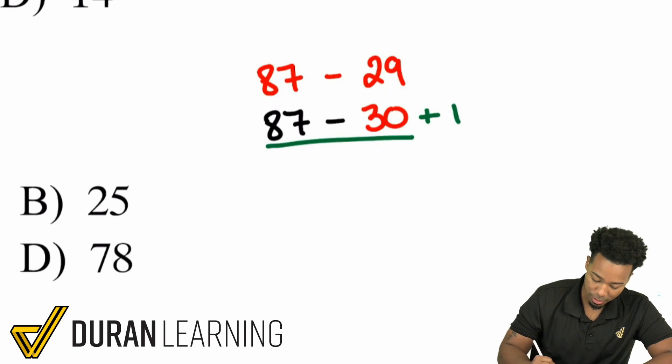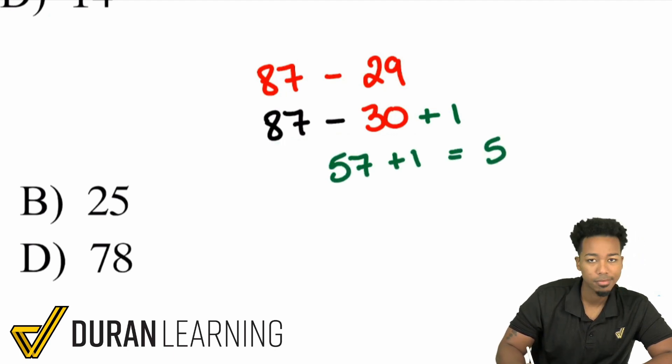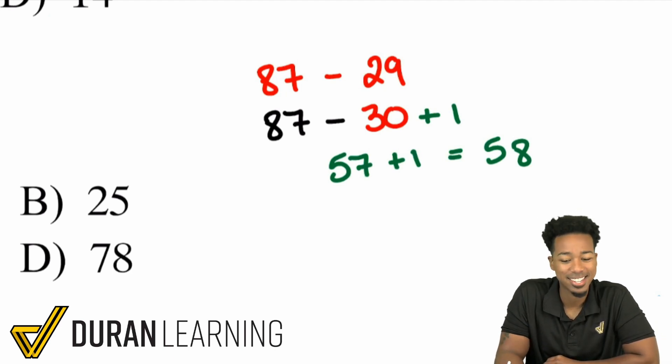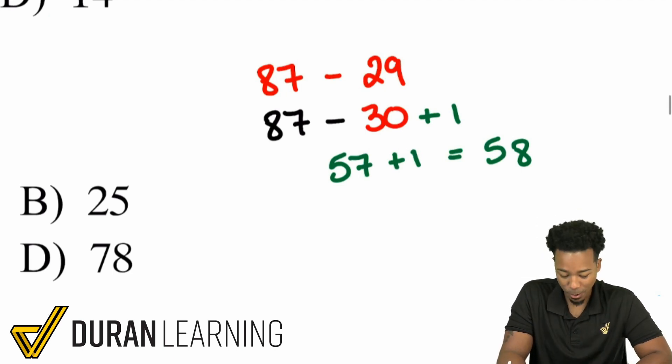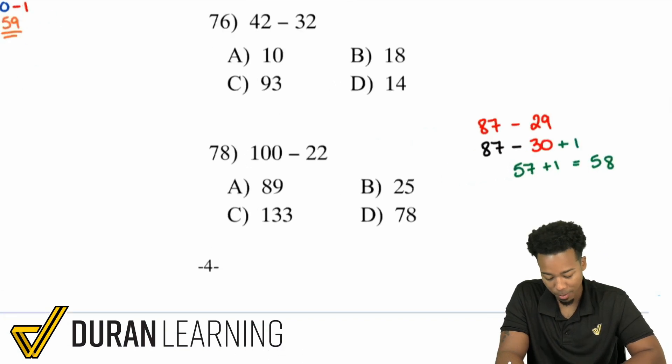And look at how easy this can become. 87 minus 30. 57. What's 57 plus 1? 58. 58. Nice and standard. Nice and easy. And so these are the strategies that we can apply my partner people.